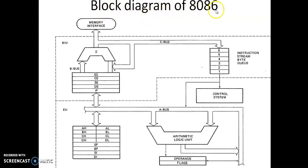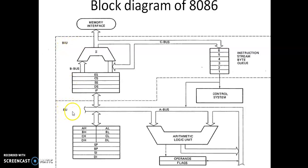We will discuss the block diagram of the 8086 microprocessor, or architecture of the 8086 microprocessor. If you see the total unit, it is divided into two functional units called the bus interface unit and execution unit. Dividing the architecture in this manner speeds up the processing, and these two units run parallelly.